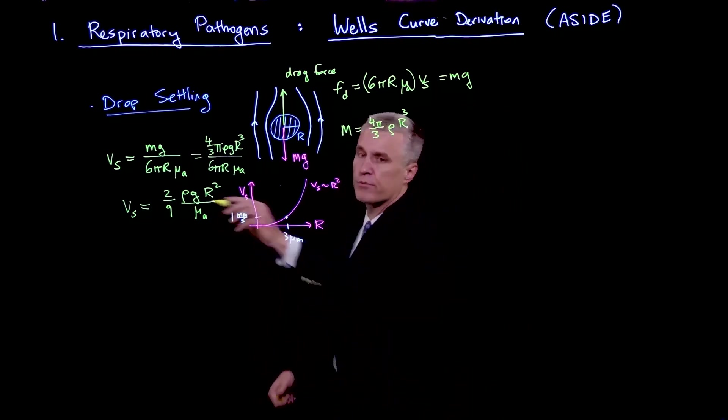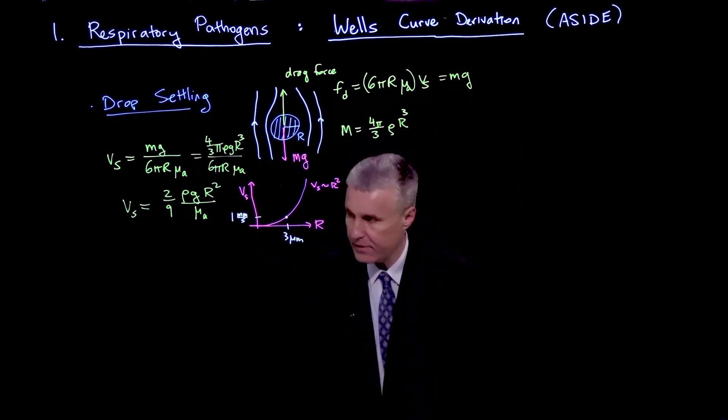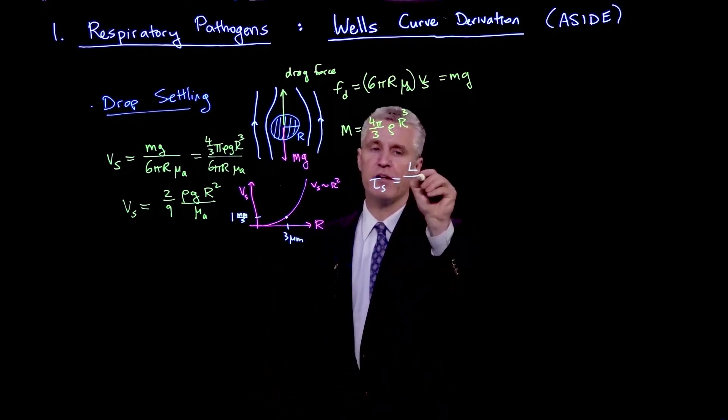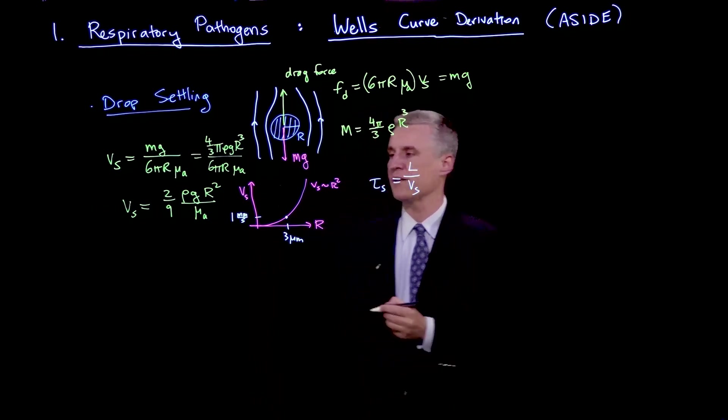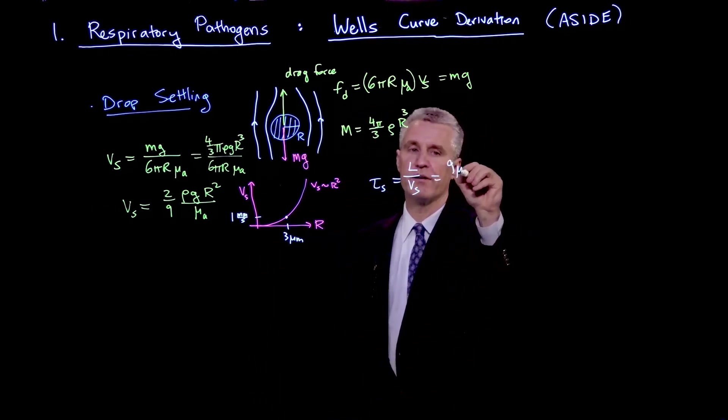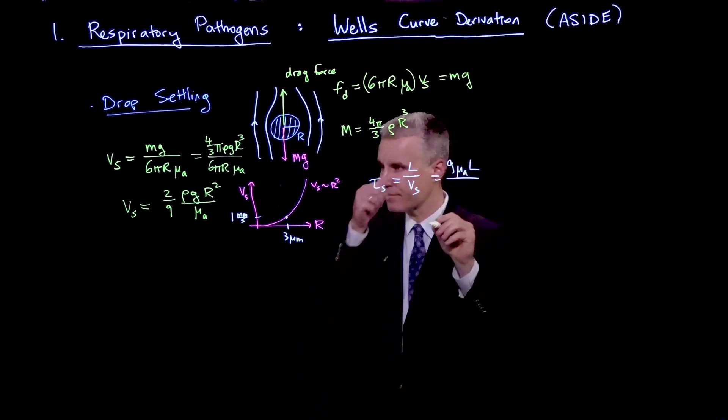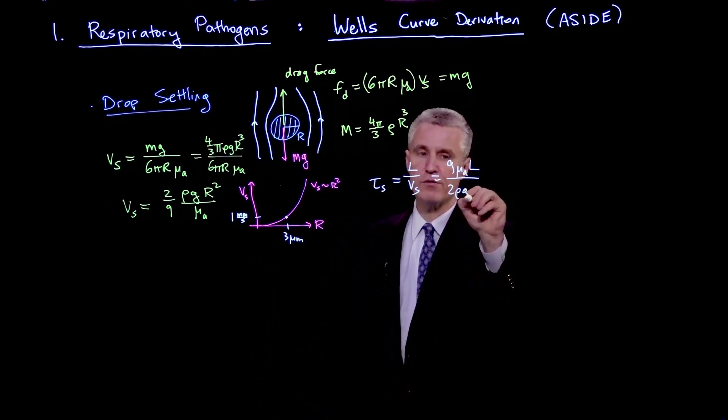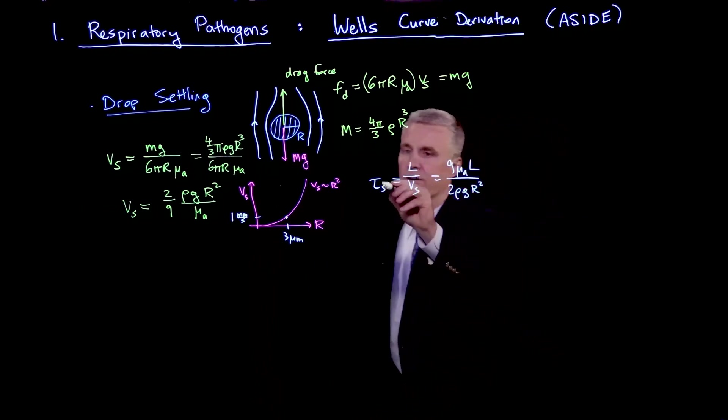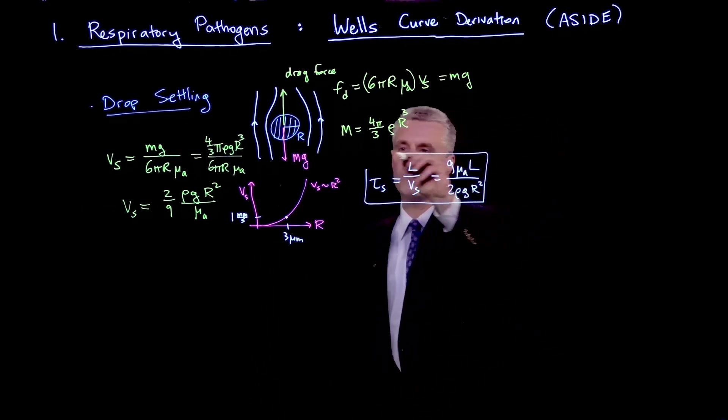That is now the second part of the calculation. Actually, to finish the first part here, what we're left with is that the settling time is L over Vs, and that's the formula that we had before, which is 9μa L divided by 2ρg r². This is our first part of the Wells curve.